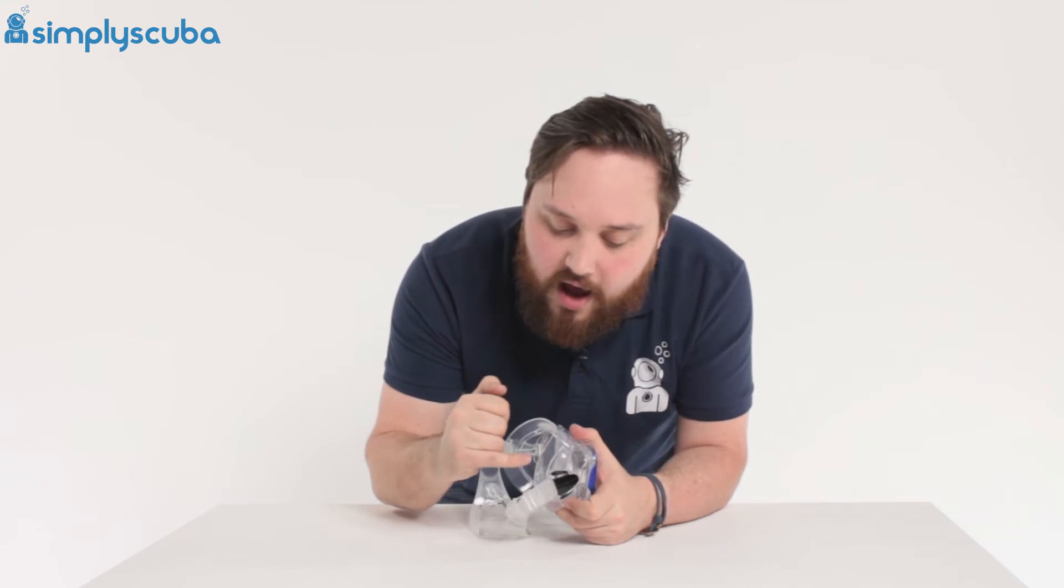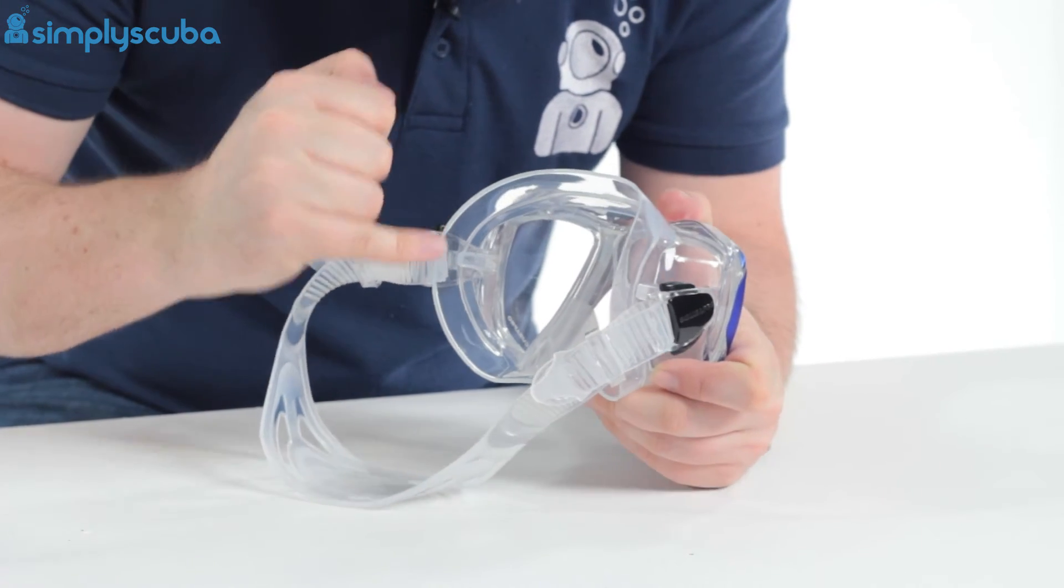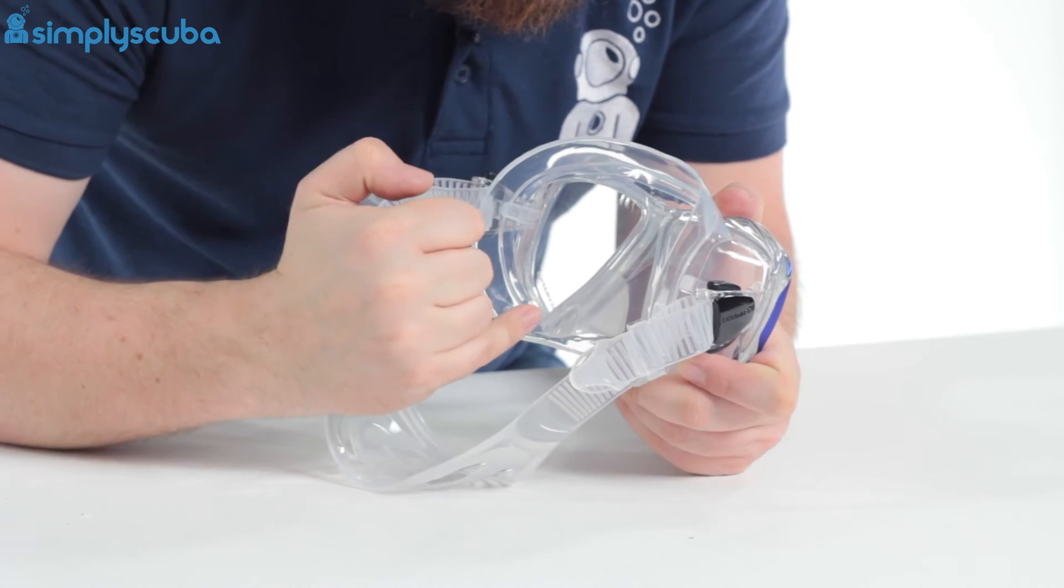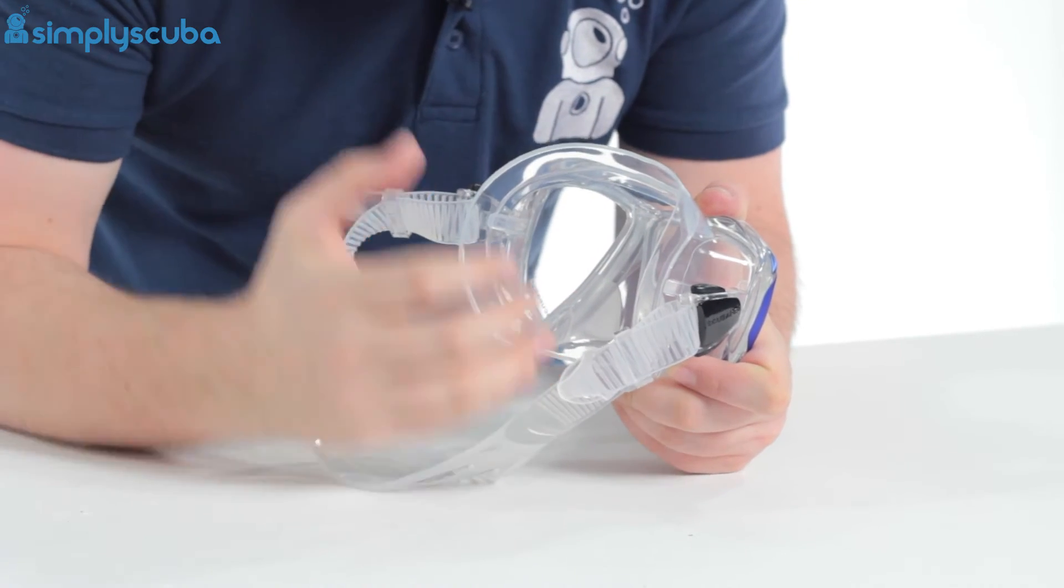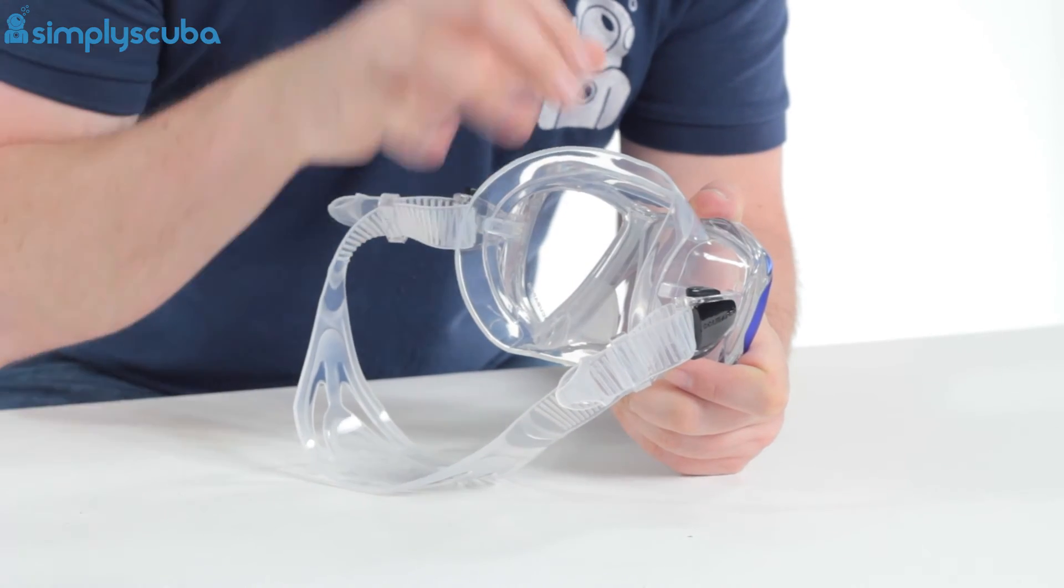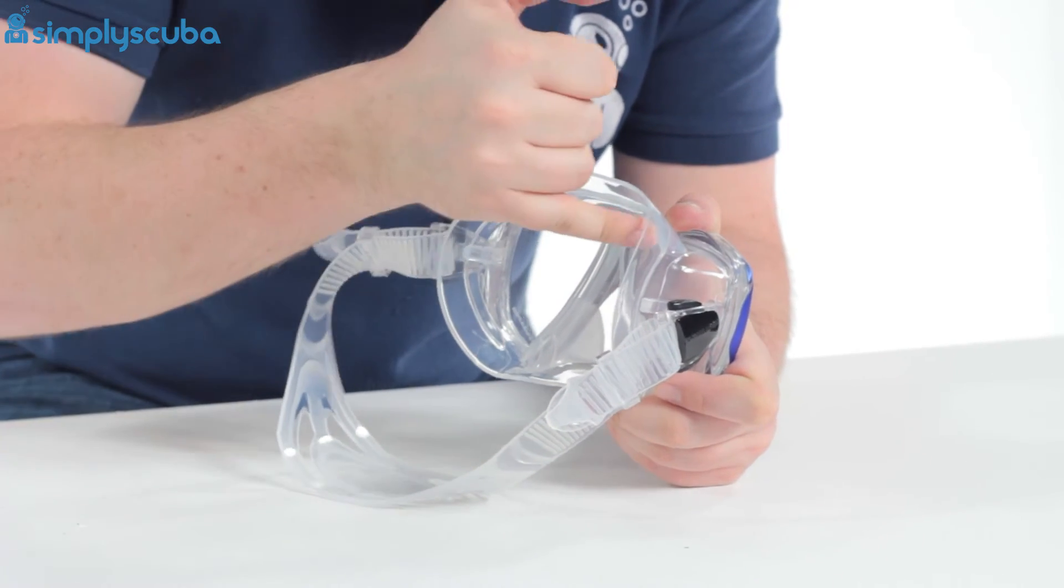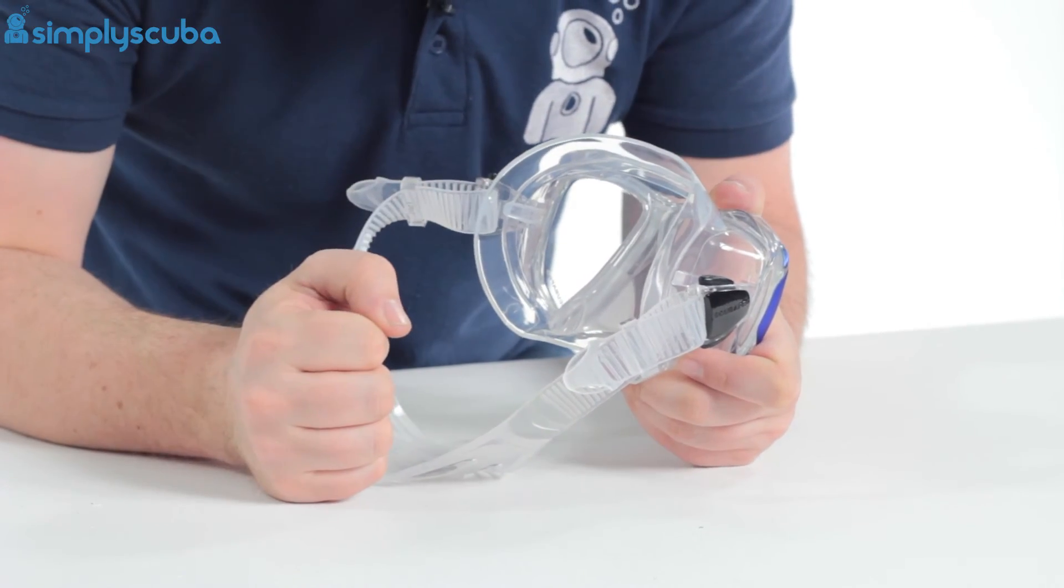The skirt itself is a very soft silicone skirt and instead of having just a single seal we have a separate internal seal here. This means that all of this becomes a sealing area all the way around your face, very wide sealing area. It spreads the pressure so you're not going to come out looking like a panda and it creates an effective seal keeping the air inside and stopping the water from getting in.